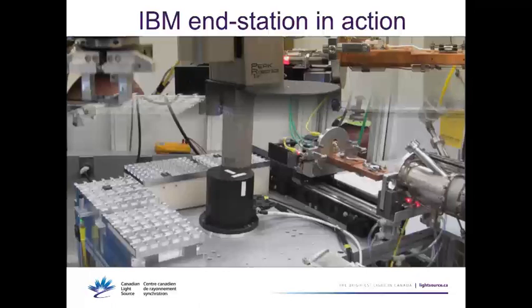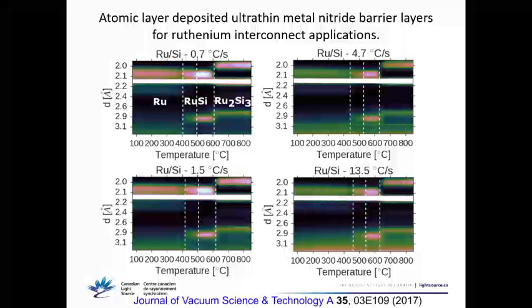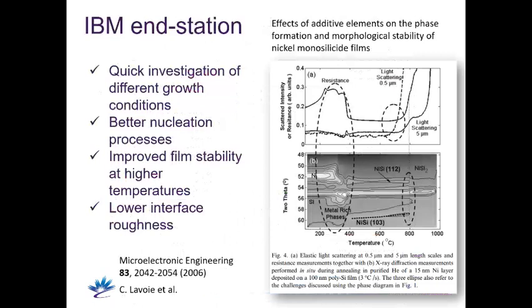One example is ruthenium silicide methyl nitride barrier layers: rapid thermal annealing reveals activation temperatures and different phases and when it's going to fail. Applied to nickel silicide, you can see many phase transitions happening, with resistance and roughness changing simultaneously — giving feedback about growth conditions, nucleation quality, film stability, and interface smoothness.